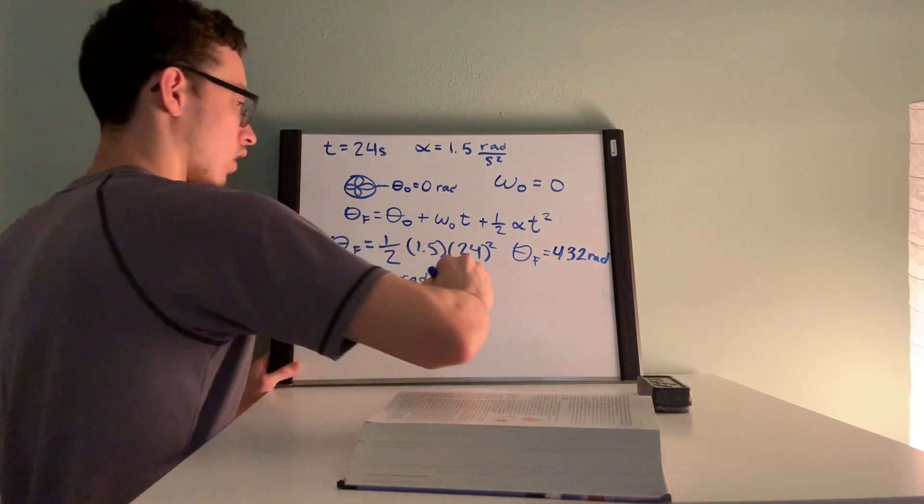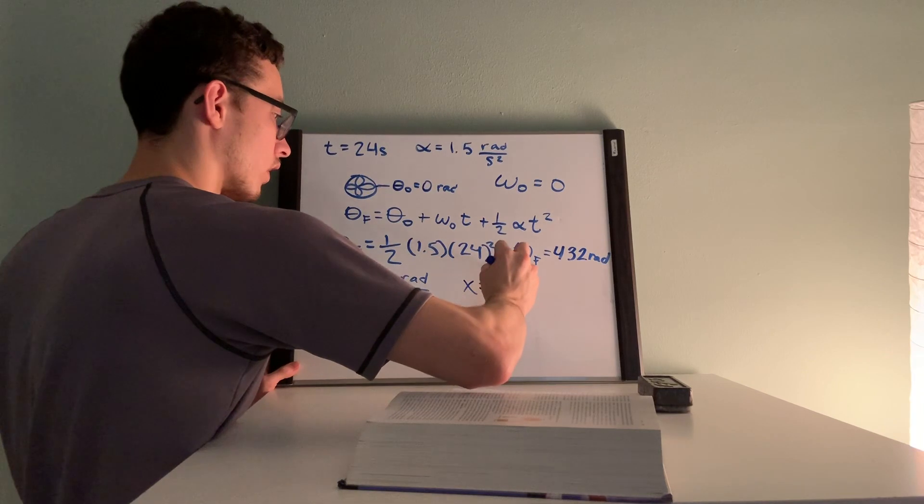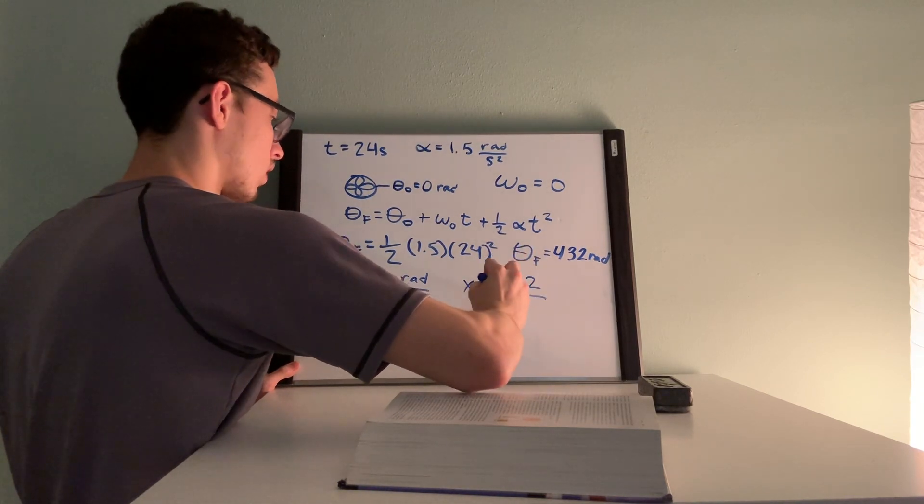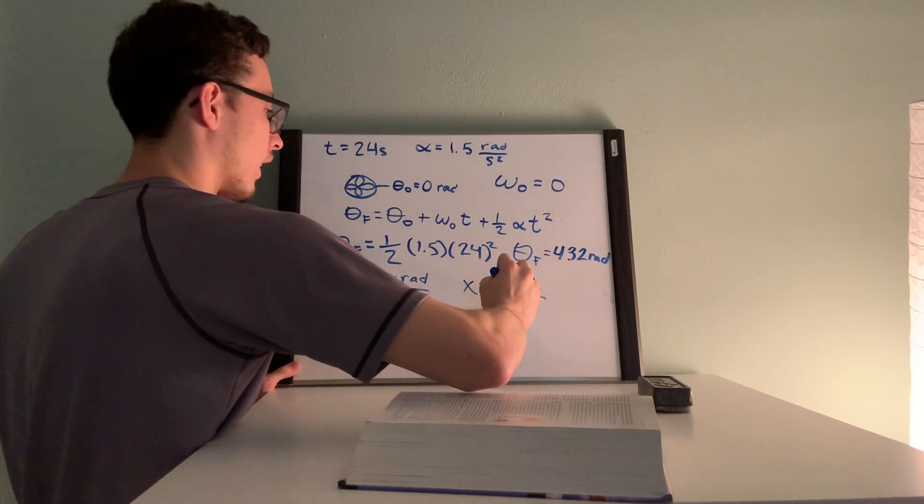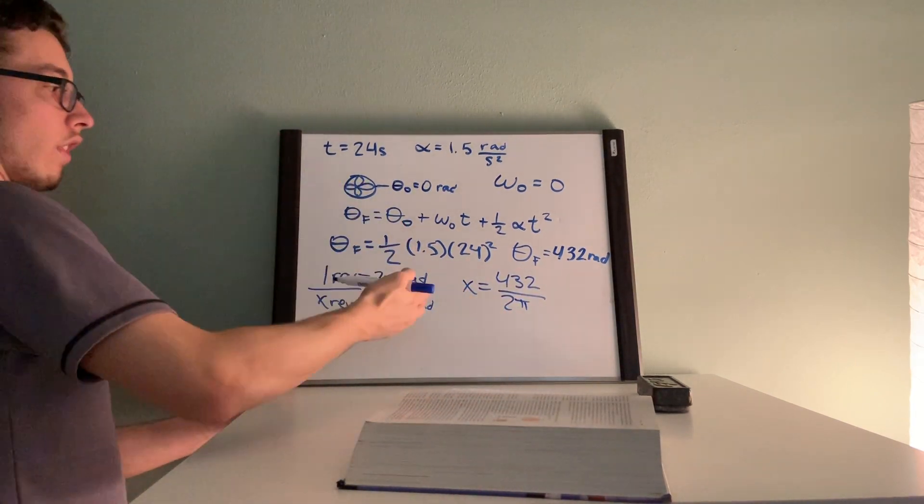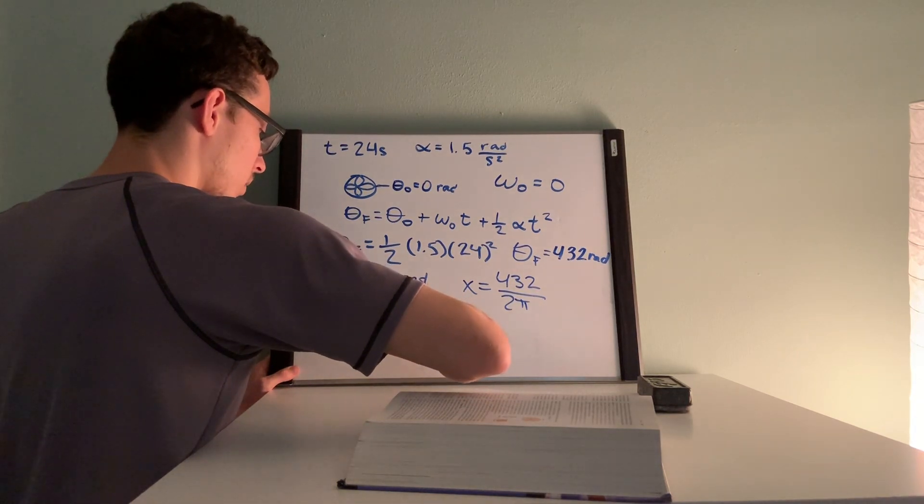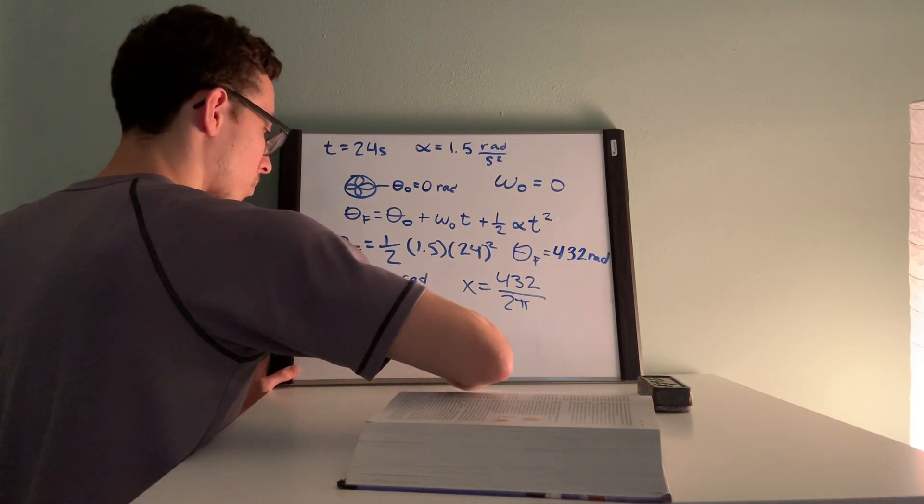I set up a conversion factor so I can see how many revolutions according to this amount of radians. So you solve for x, just do some cross multiply, x is equal to 432 divided by 2π, and that outputs a value of 68.8 revolutions.